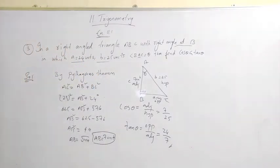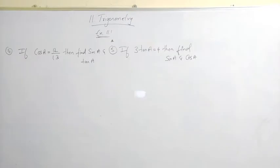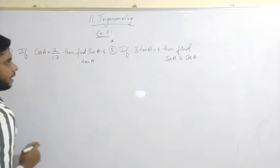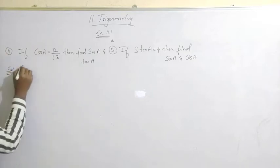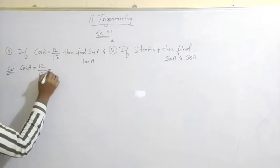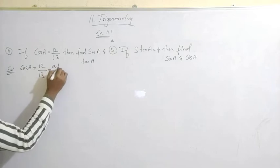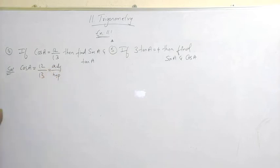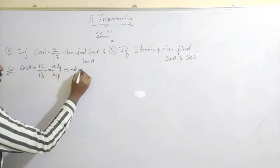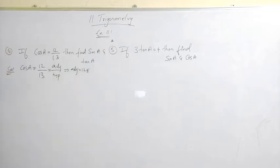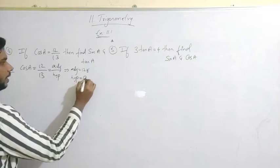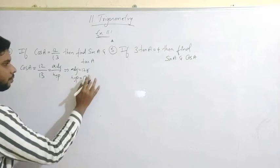Now let's see the fourth question. Given cos A equals 12 by 13, find sin A and tan A. The formula for cos A is adjacent divided by hypotenuse. So I can take adjacent as 12K and hypotenuse as 13K, where K is some positive number.